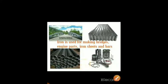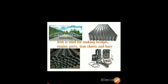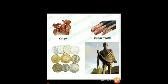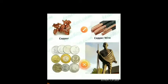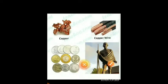So iron is used for making bridges, iron sheets, bars and engine parts. Second use of metal: Copper. Copper is used as wire and coins, and also for making statues.